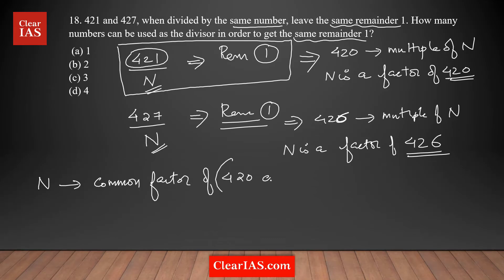You don't need to count one here because one is always a common factor, but you cannot count one — if you divide any number by one you will not get a remainder of one. So other than one, what are the common factors of 420 and 426? The best way to find this is to prime factorize these numbers.